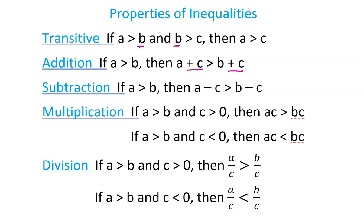For multiplication: if A is greater than B and C is greater than zero, then AC is greater than BC. However, if C is less than zero, notice how the symbol switches — because multiplying by a negative flips which side is larger. For division: if you divide both quantities by C, the symbol stays the same. But if C is negative, the inequality symbol changes as well.